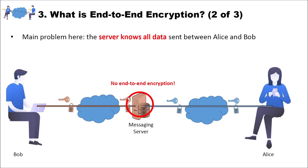Bob clearly encrypts his data before he sends it through the internet. But the server can then decrypt the messages from Bob — it could store the messages, it could do whatever it wants with them. Then it encrypts the messages with the key between the messaging server and Alice, and Alice can decrypt the messages. So in the middle of that communication scenario, the messaging server is able to read everything. This could also be an example with emails: Bob sends an email to Alice, it travels encrypted to the email server, but the emails on the email server are not encrypted. And we can fix this problem using end-to-end encryption.